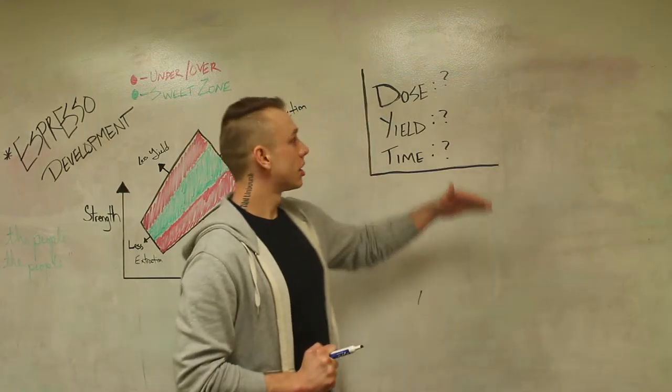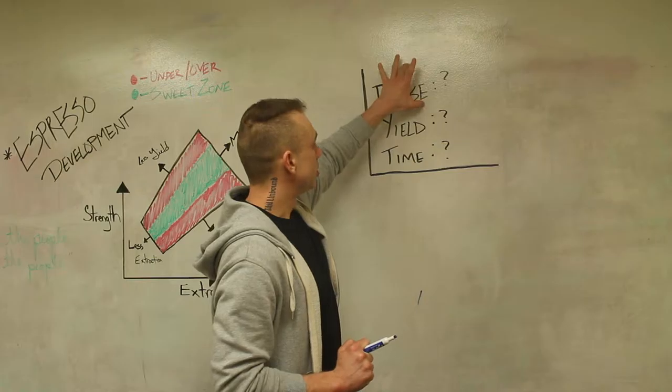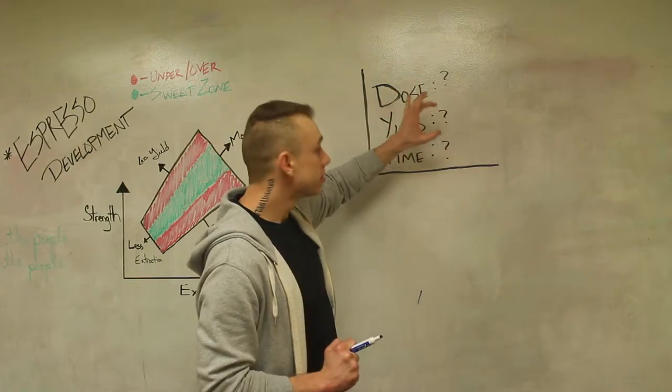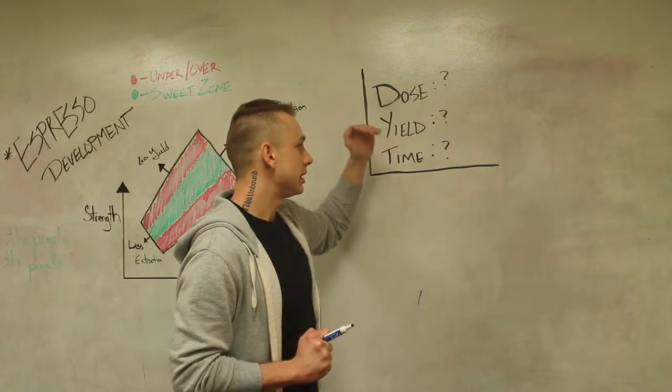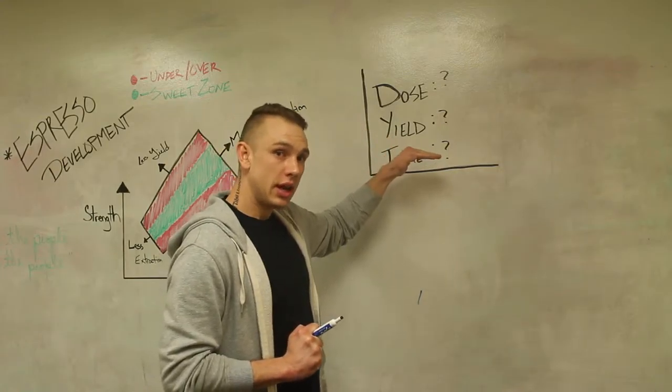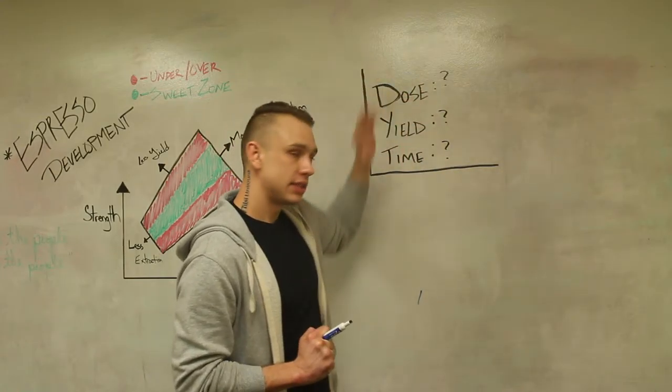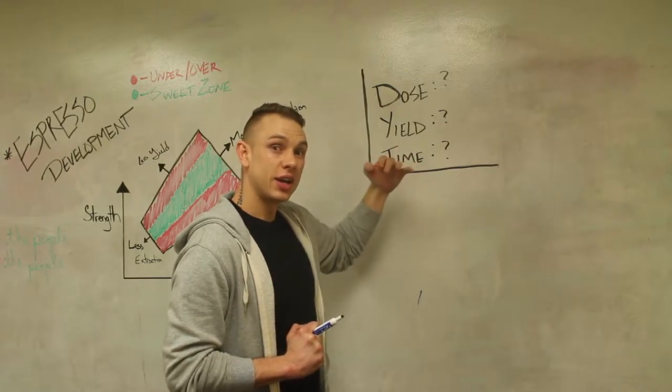So with that in the espresso hierarchy it does go in priority with dose being fixed first, yield being fixed second, and time being the last. And what that does is it locks in what your parameters are and how you dial in.